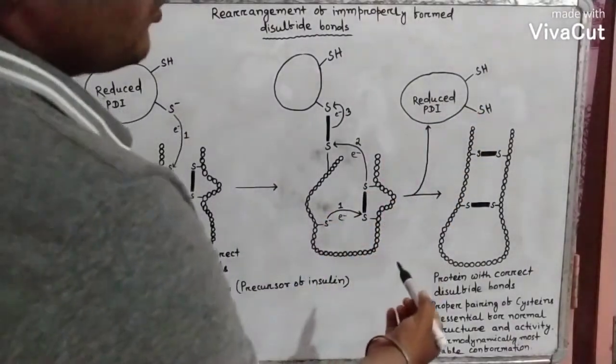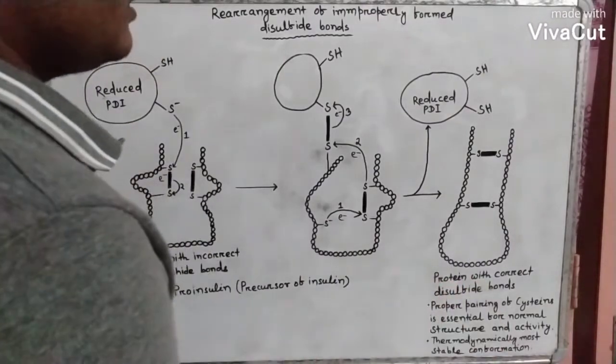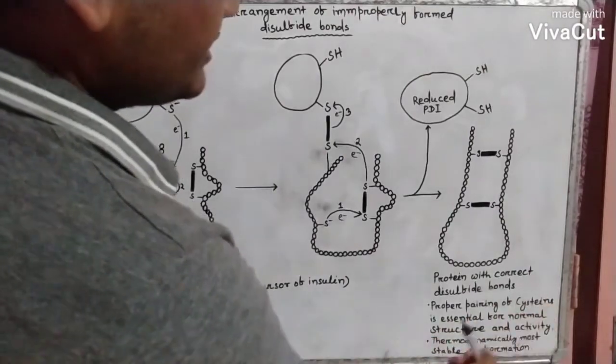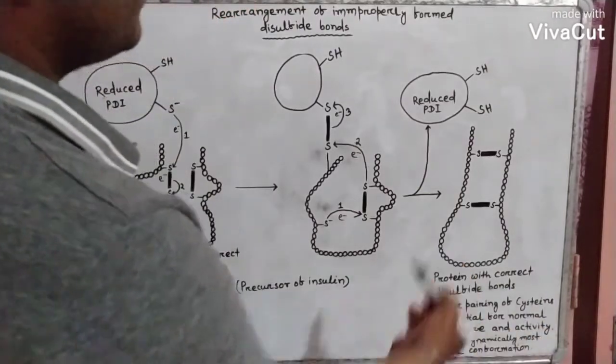Now the question arises, why does this type of process generally occur? Because the proper pairing of cysteine is essential for the normal structure and activity of the protein.